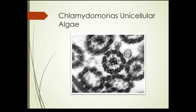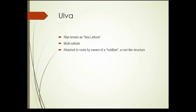Here's Chlamydomonas — it's a unicellular algae. So there are a lot of forms, and so far the ones we've looked at here have been microscopic. Next we'll look at some that are a little larger and have structures that we may be familiar with.